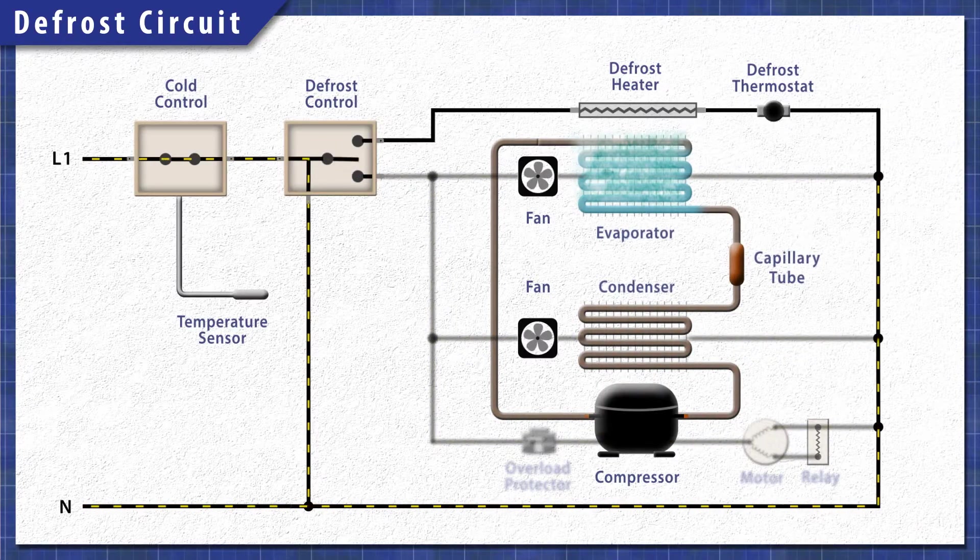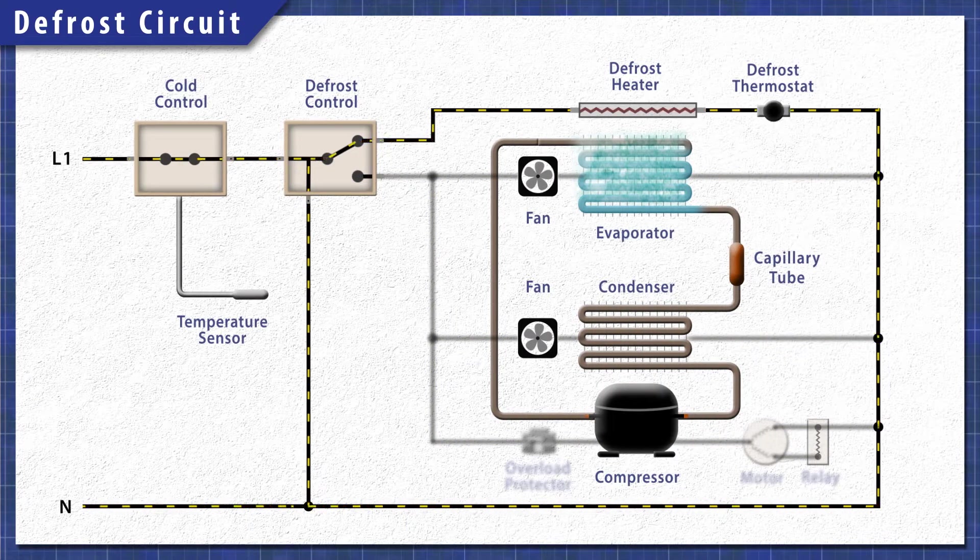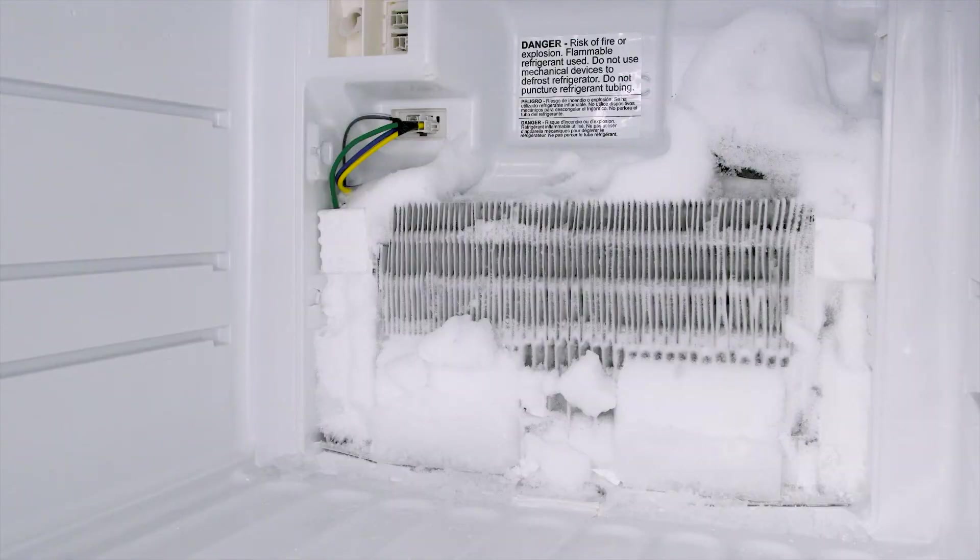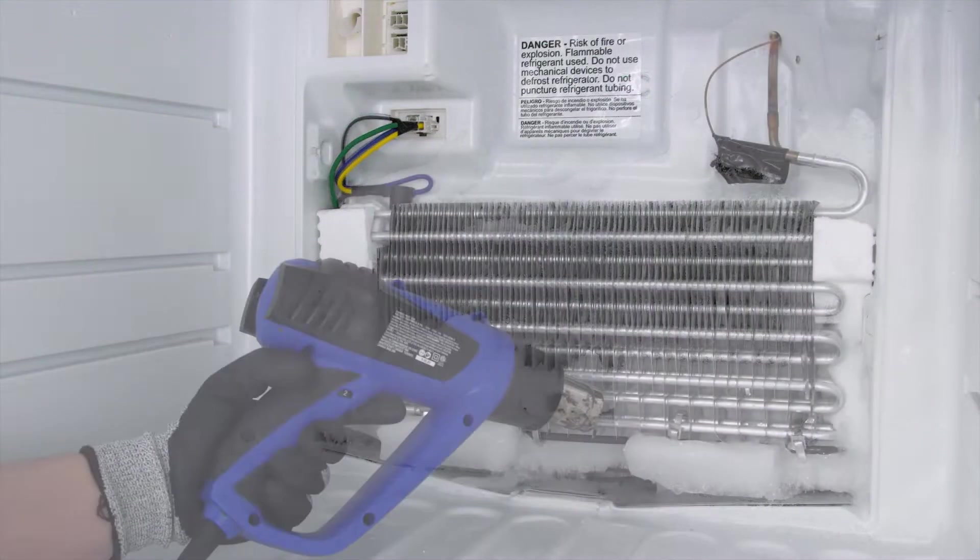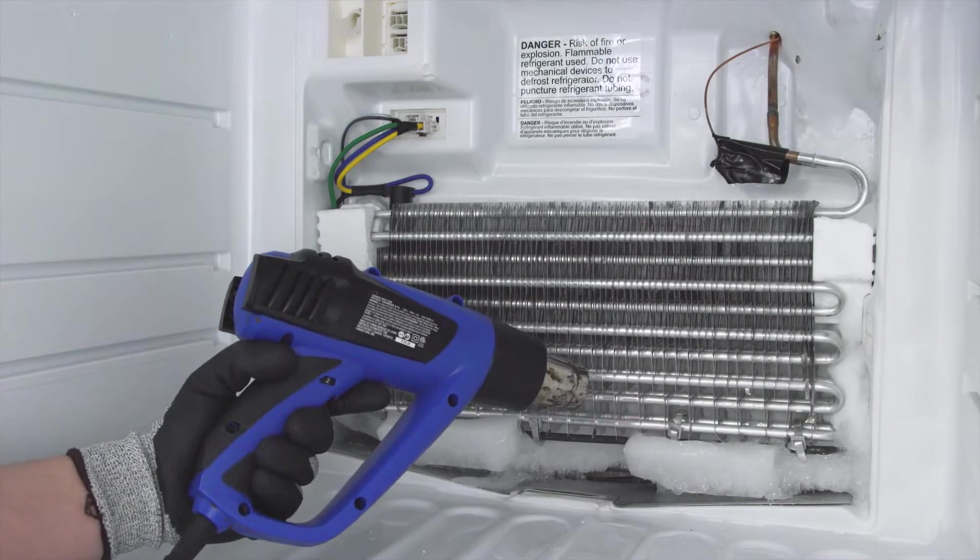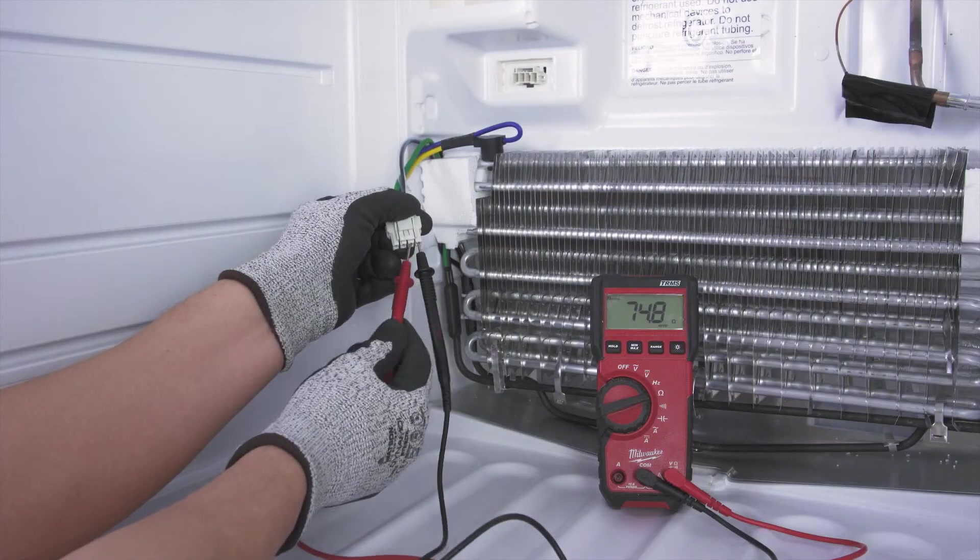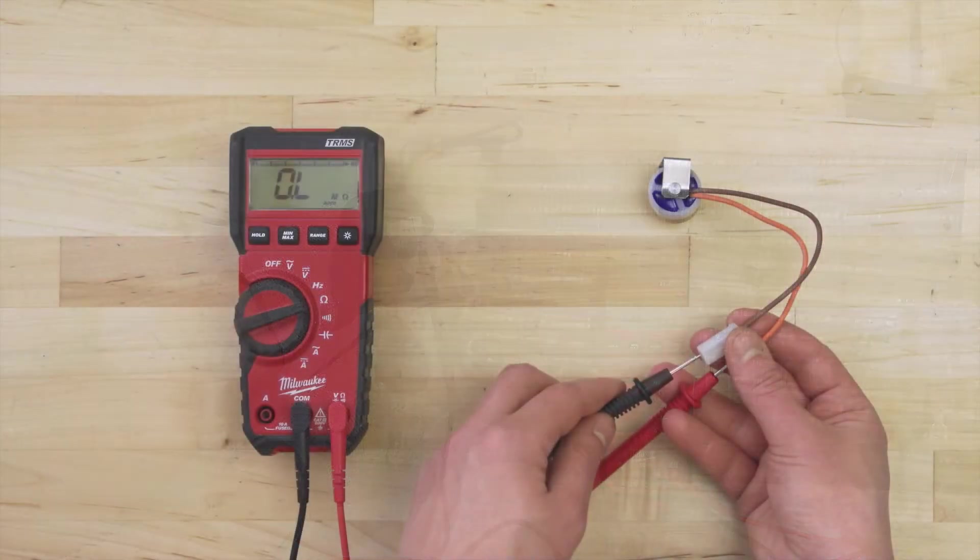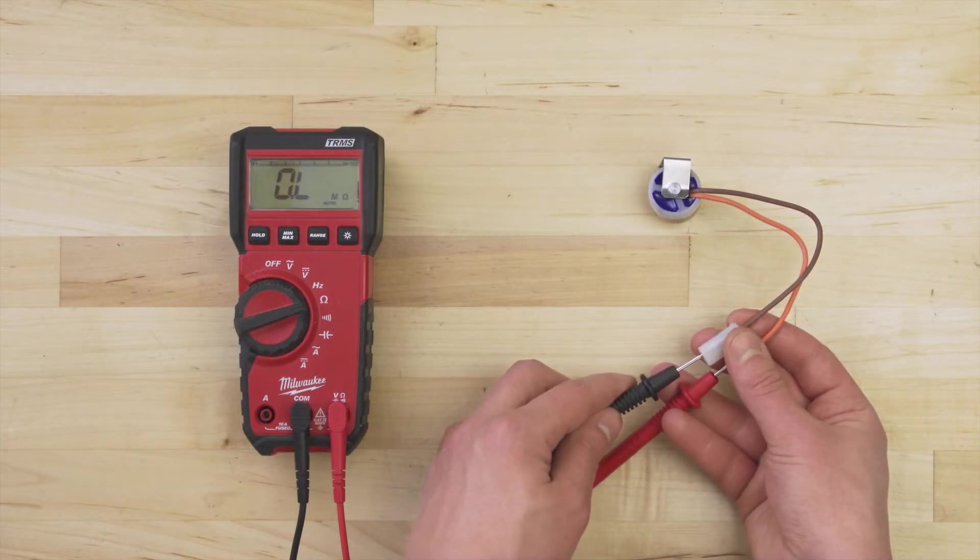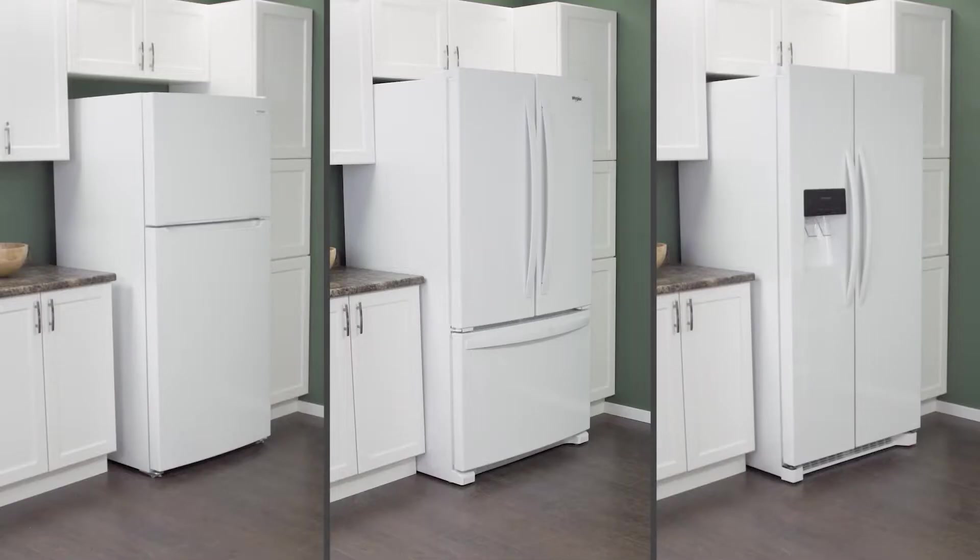In this episode, first we'll learn how it all works. Then we'll remove the ice to gain access to the defrost components. Finally, we'll test each component with a multimeter. This applies to most top freezer, bottom freezer and side-by-side refrigerators.